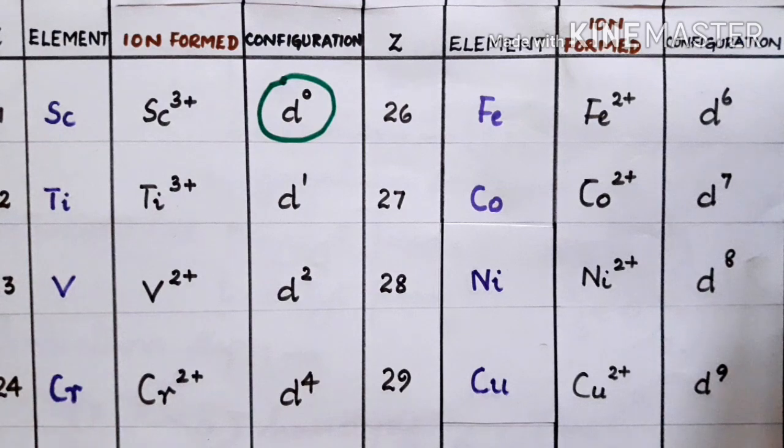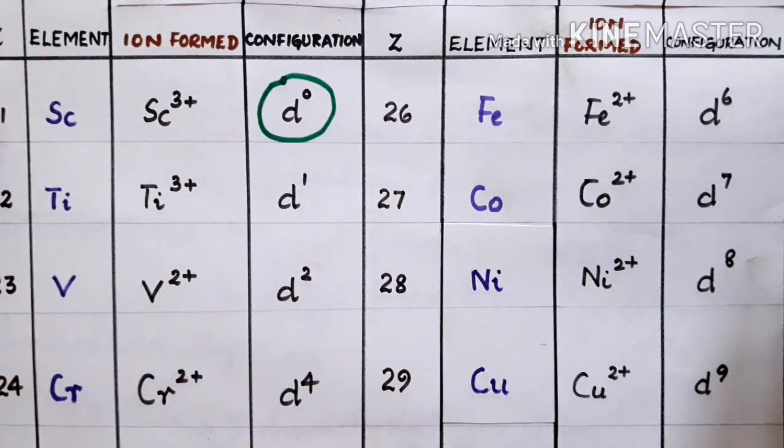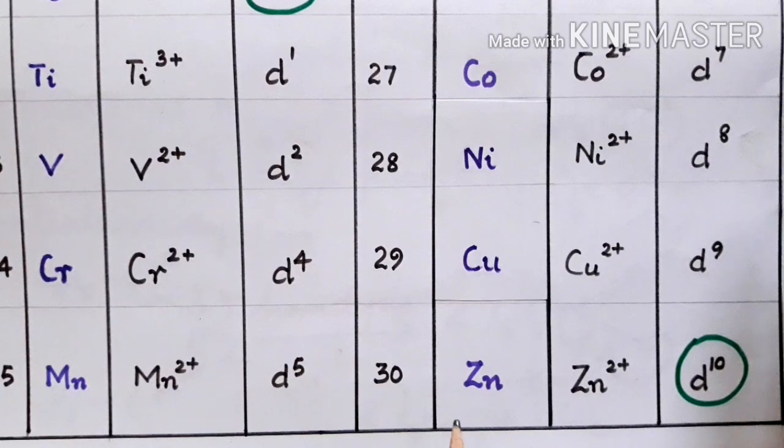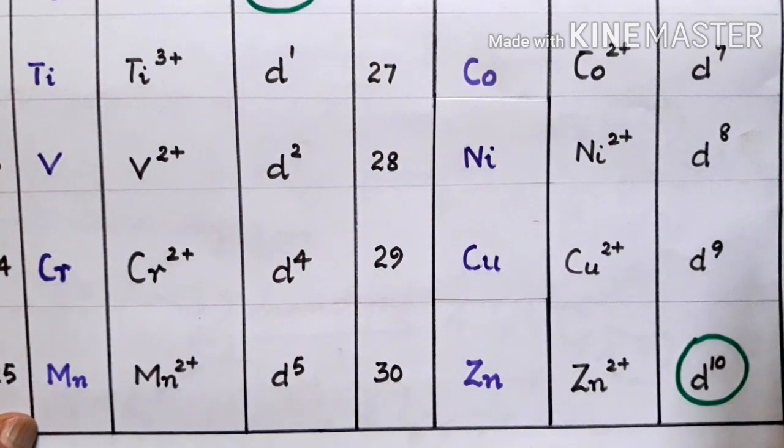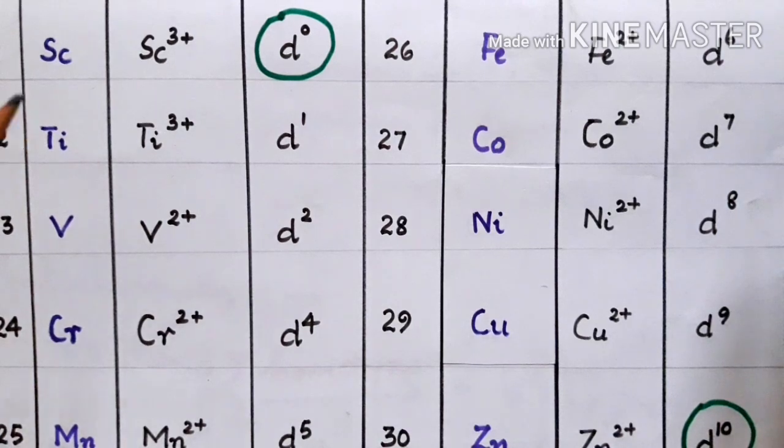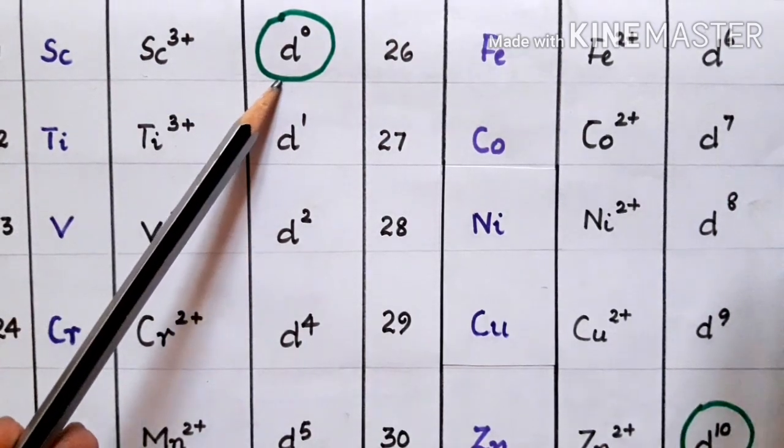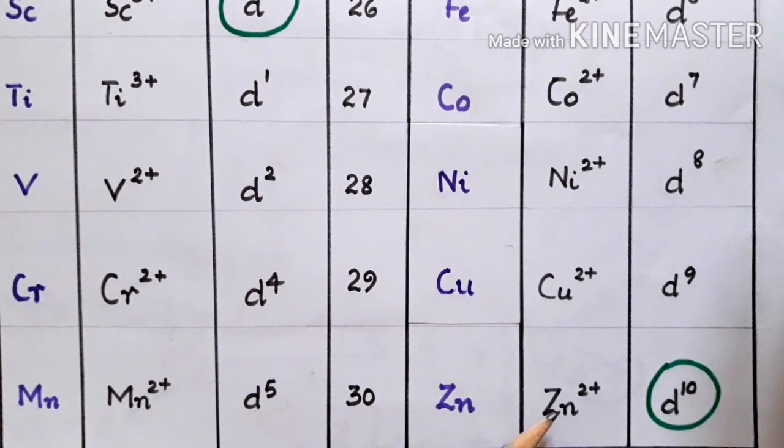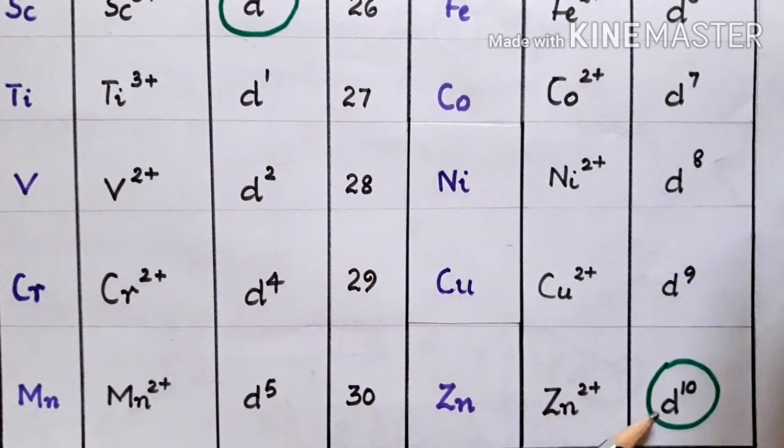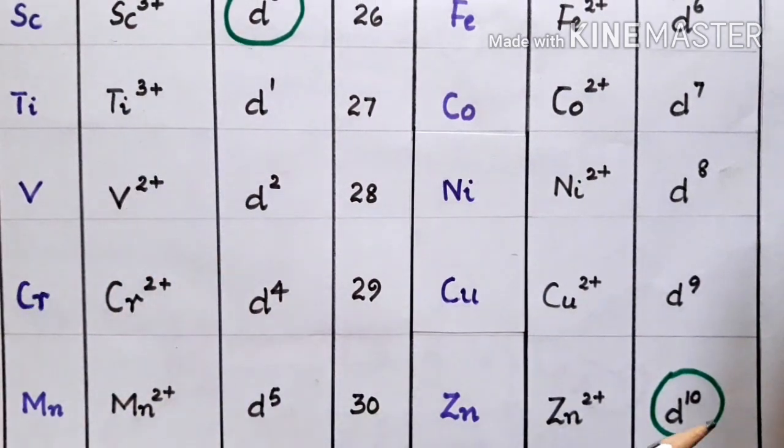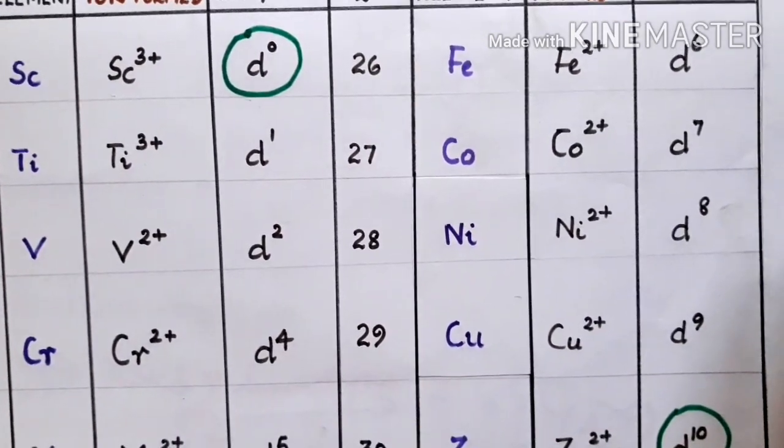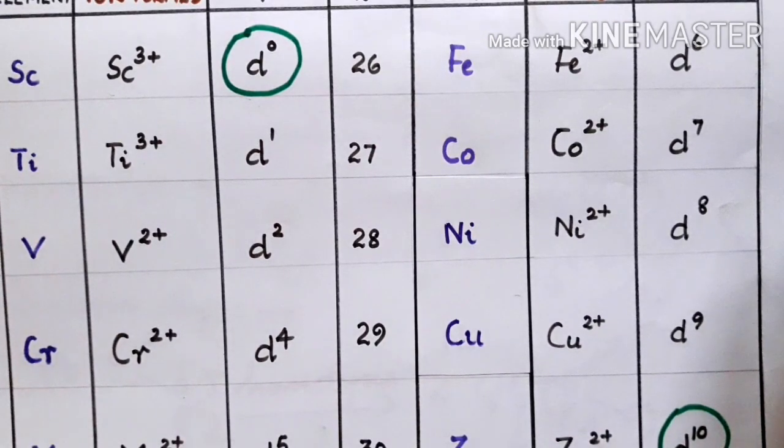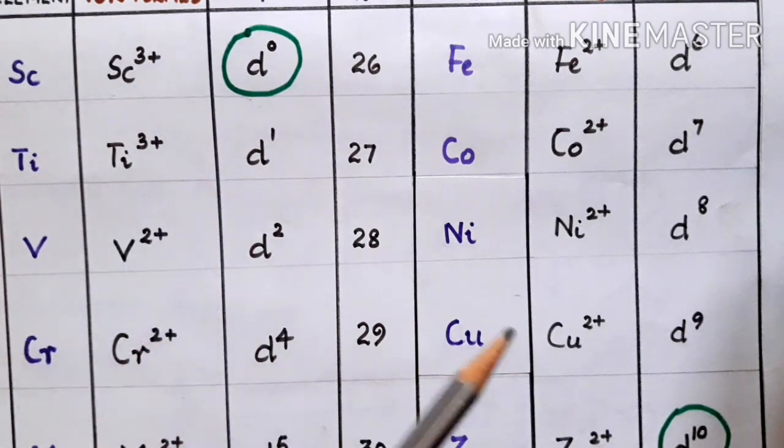In 3d series, we know the element starts from scandium, 21, to zinc, that is 30. When we check the ions formed from it, scandium 3+ will have d⁰ configuration and the ending element zinc will have Zn²⁺ with configuration d¹⁰. Except for d⁰ and d¹⁰, all other ions that are formed from the series will have at least one unpaired electron. So the configurations with d¹ to d⁹ will show color in the solution and in the complex.